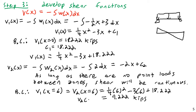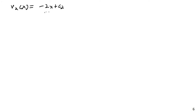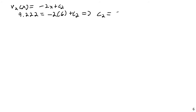Setting v2(6) = 9.222 and substituting into −2x + c2: 9.222 = −2(6) + c2, so c2 = 21.222. Therefore v2(x) = −2x + 21.222 kips.